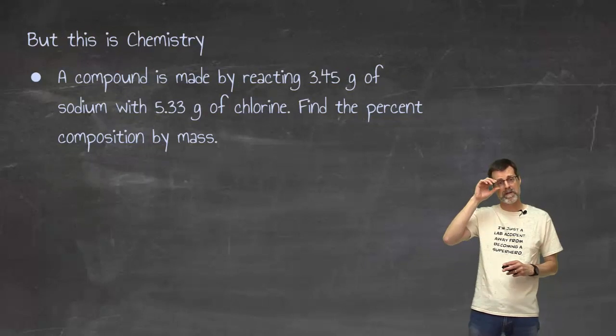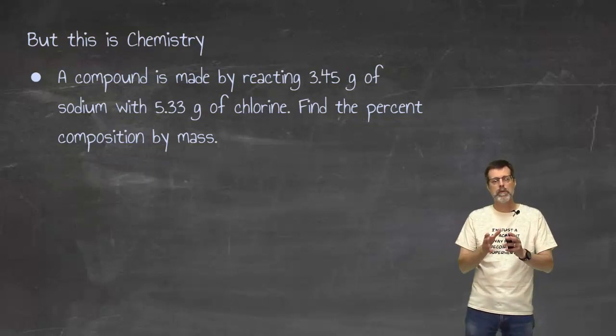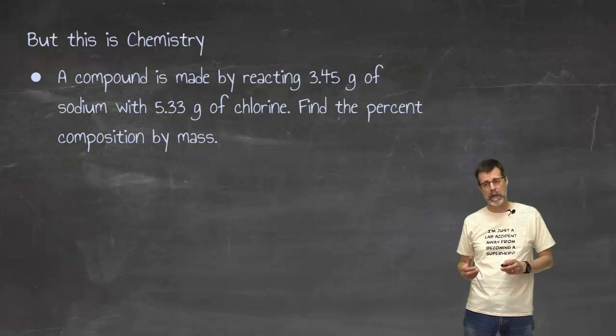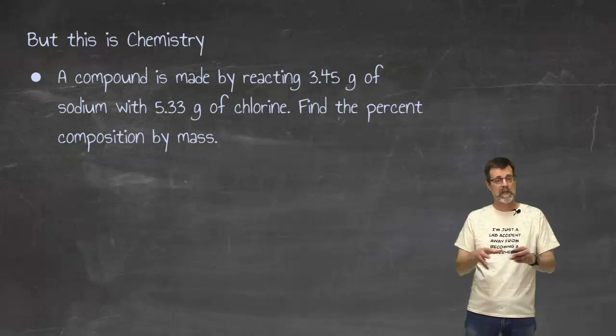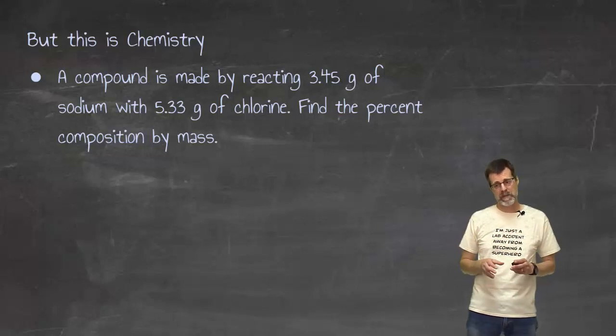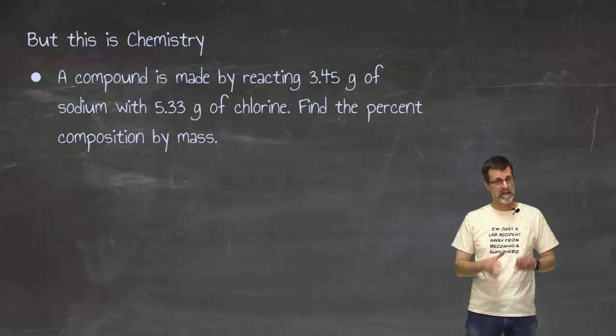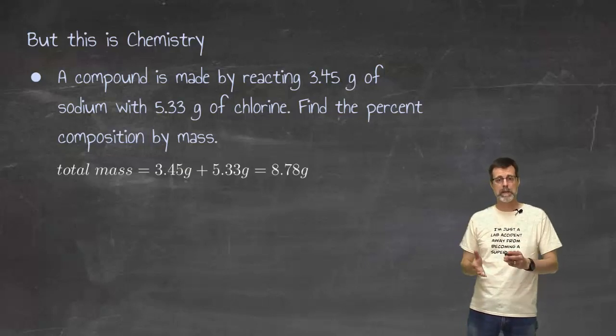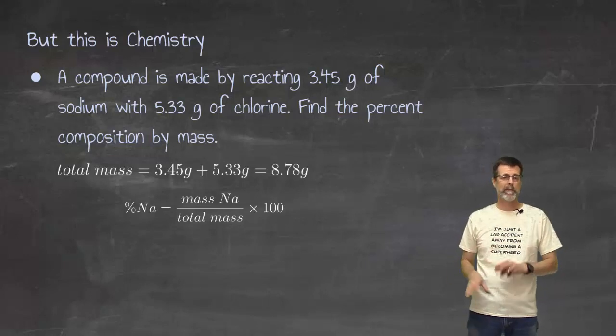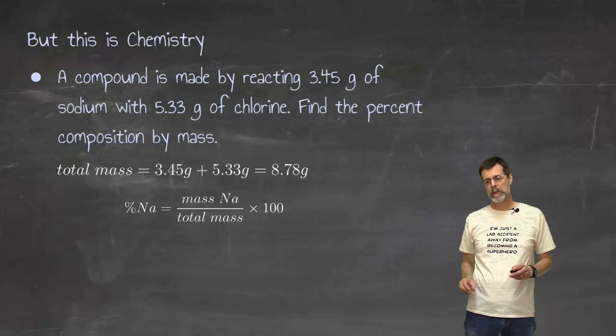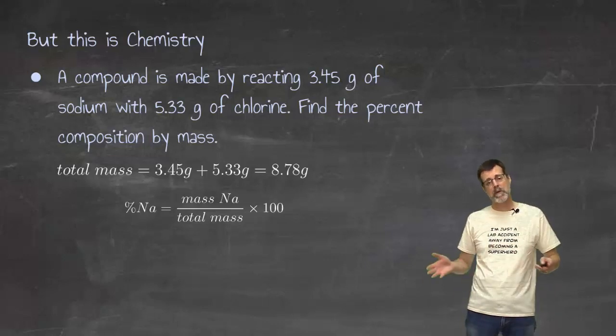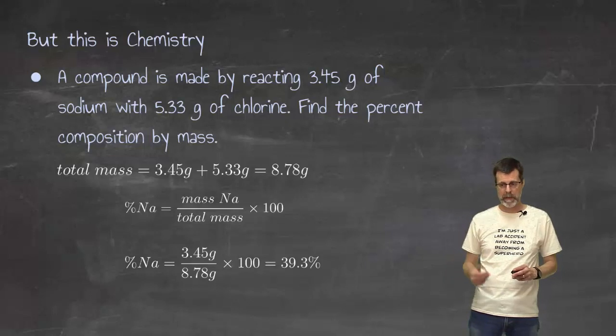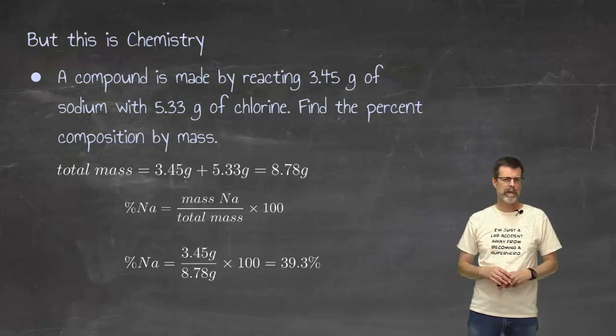Bring it back to chemistry. If you knew the masses of elements that were involved in making a compound, so in this case, 3.45 grams of sodium, 5.33 grams of chlorine, they get together and make a compound. How does that percent composition by mass? I'm going to do exactly the same thing I do on a test, the amount that I have, divided by the total amount. Same thing I did with the jelly beans. I need the total mass. So, if I wanted to do the mass of sodium, I would need the mass of sodium, divided by the total mass, multiply that by 100. The percent of sodium is 3.45 grams, divided by 8.78 grams, times 100, to get 39.3%.